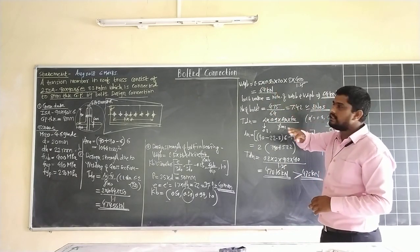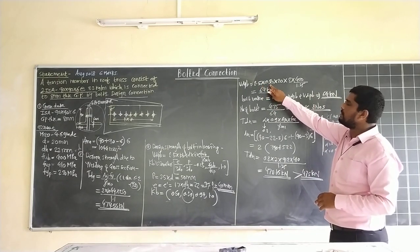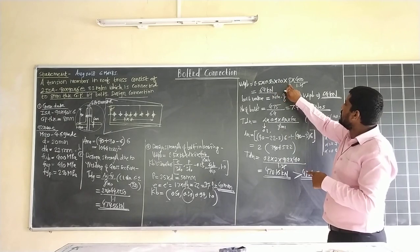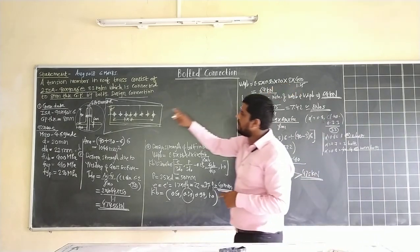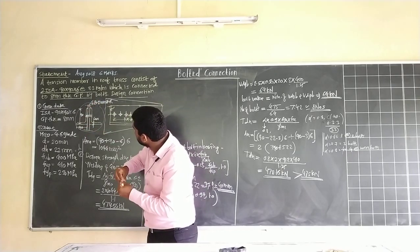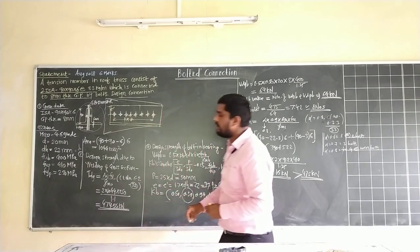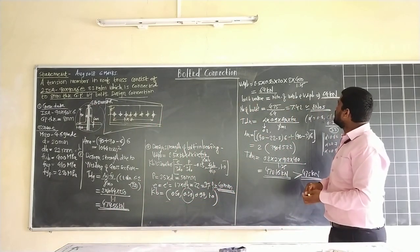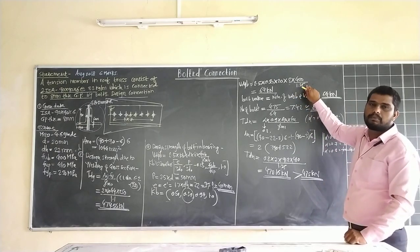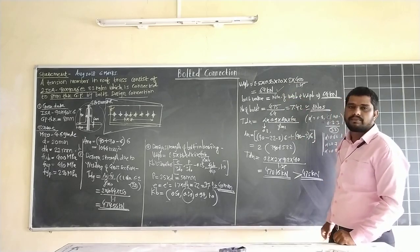Put values in V_dPB: 2.5 into 0.5, diameter of bolt 20 mm, thickness of plate 8 mm (gusset plate thickness), 400 divided by gamma_Mb which is 1.25. Answer is 64 kN.